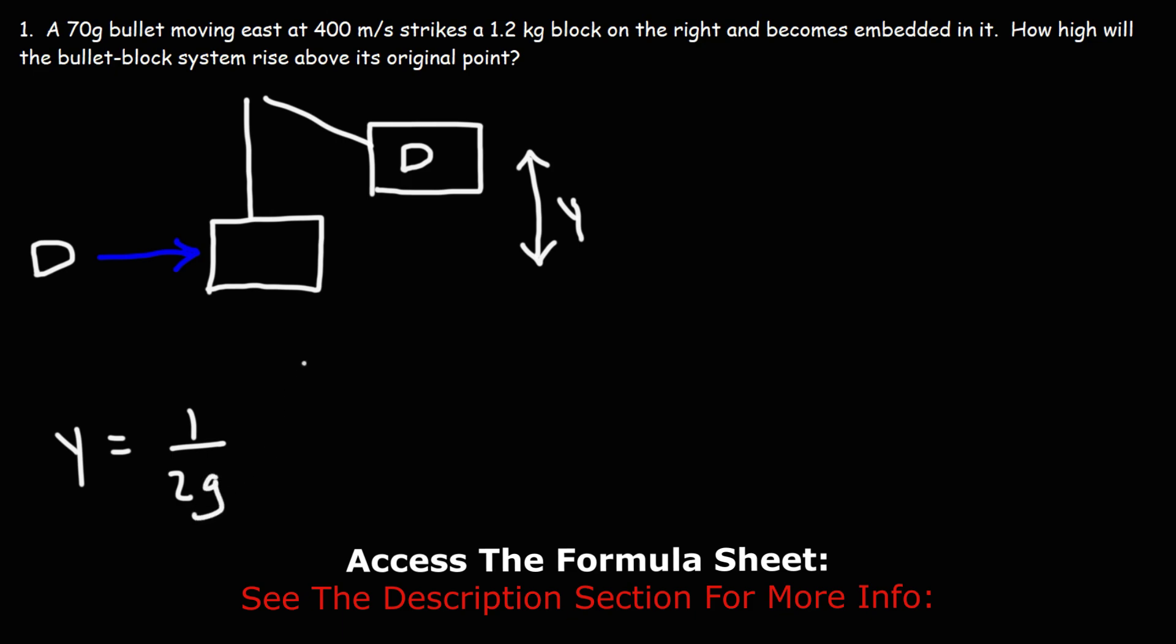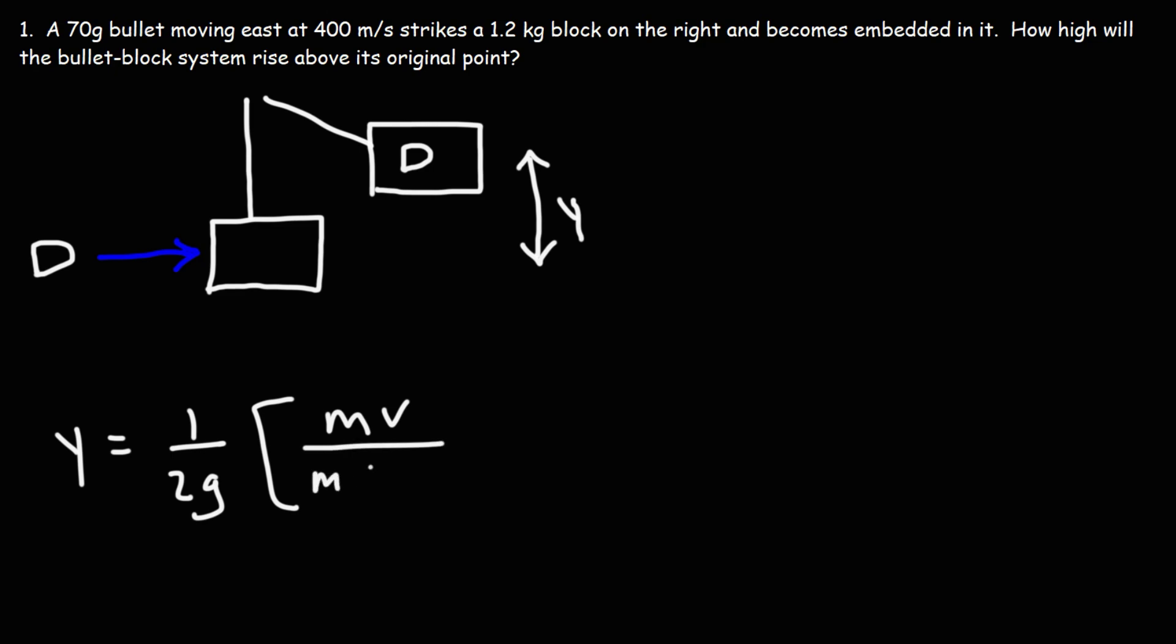It's 1 over 2g times mv over the sum of the two masses, and we need to square it. Capital M represents the mass of the block, lowercase m represents the mass of the bullet in kilograms, g is 9.8, and v is the initial speed of the bullet. So let's go ahead and plug everything in.